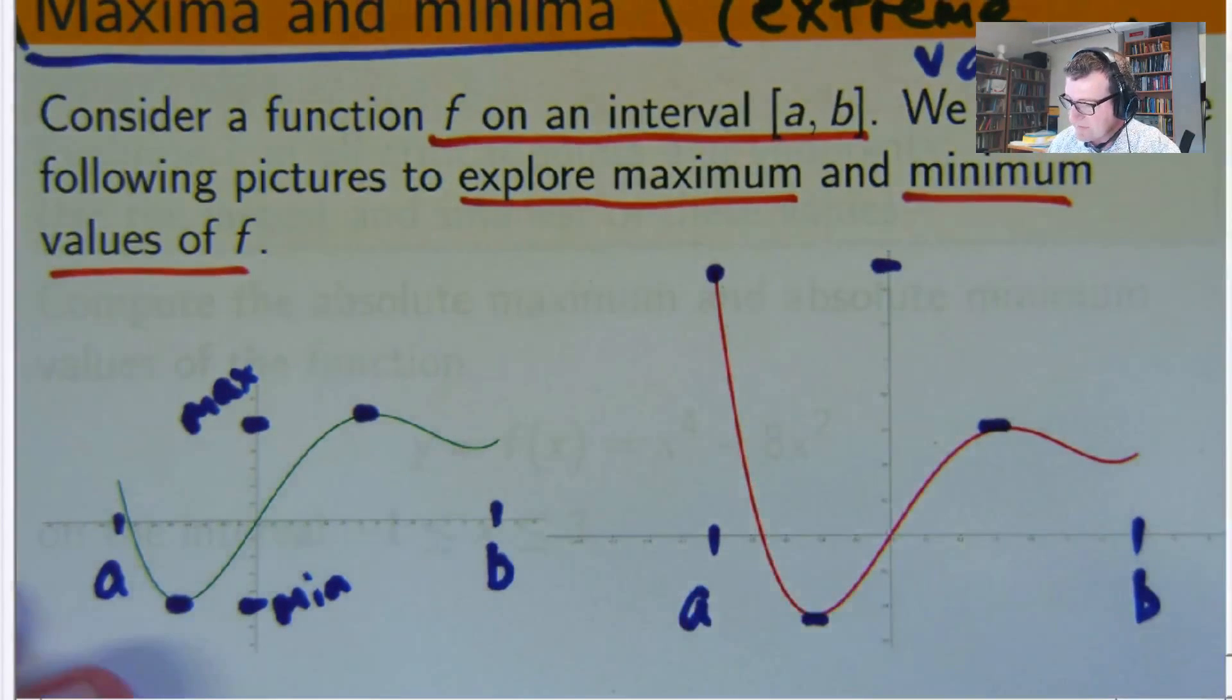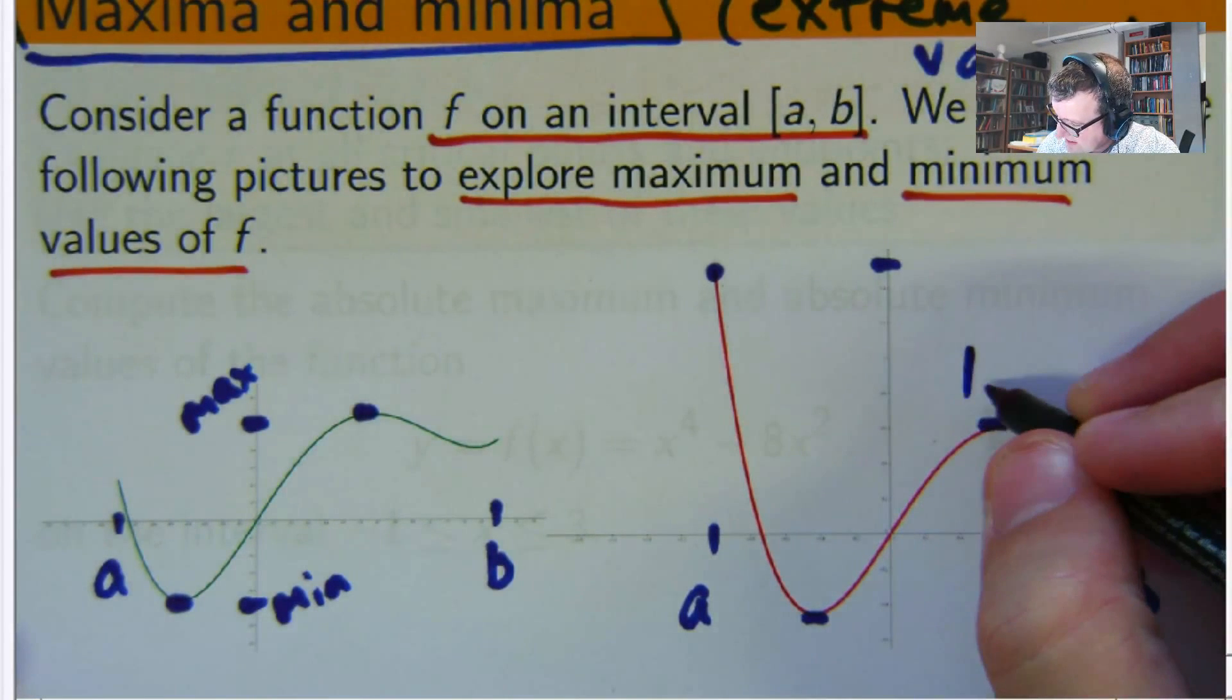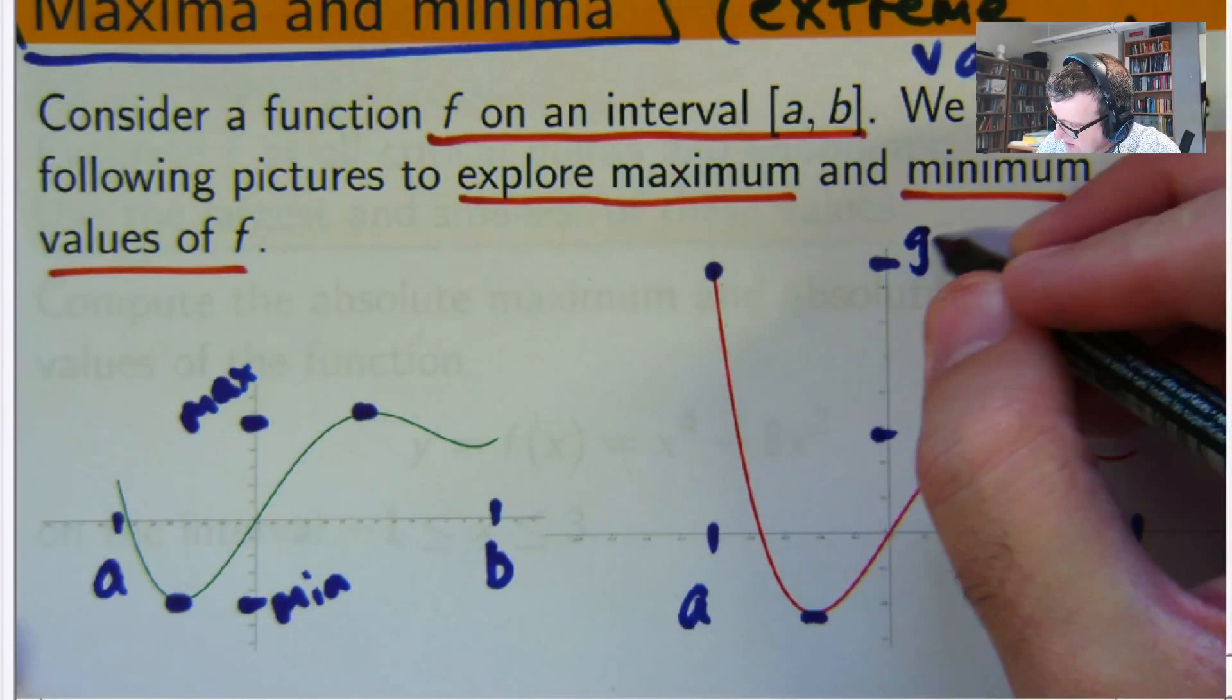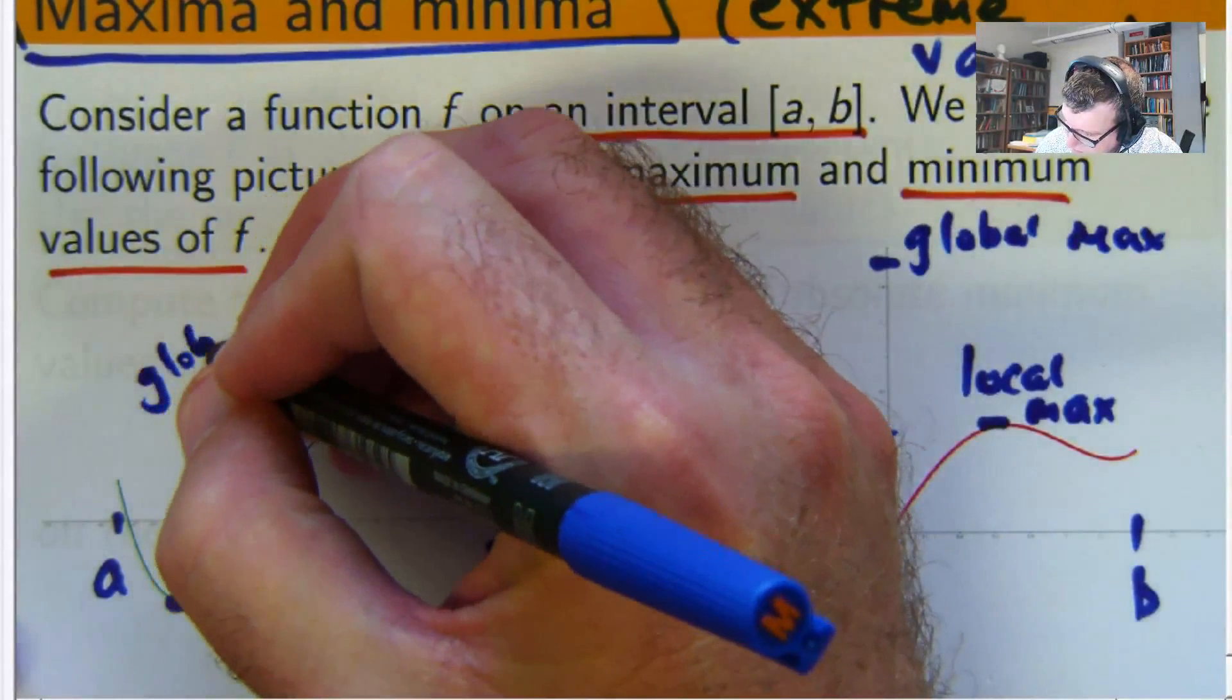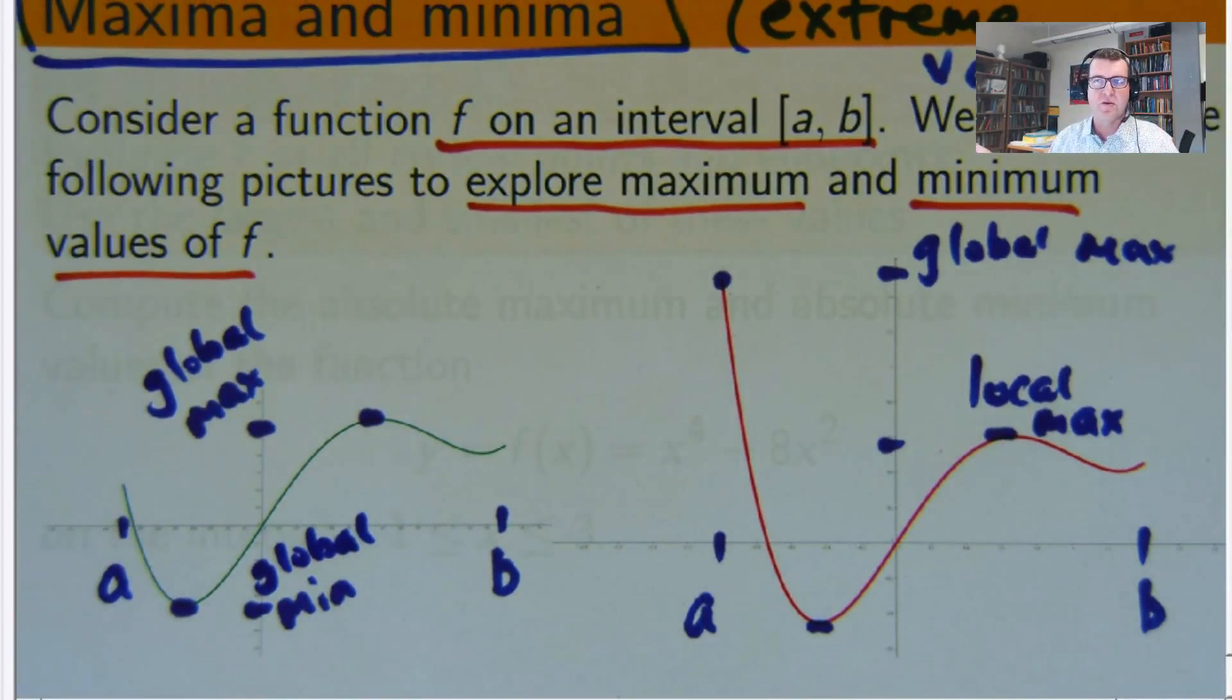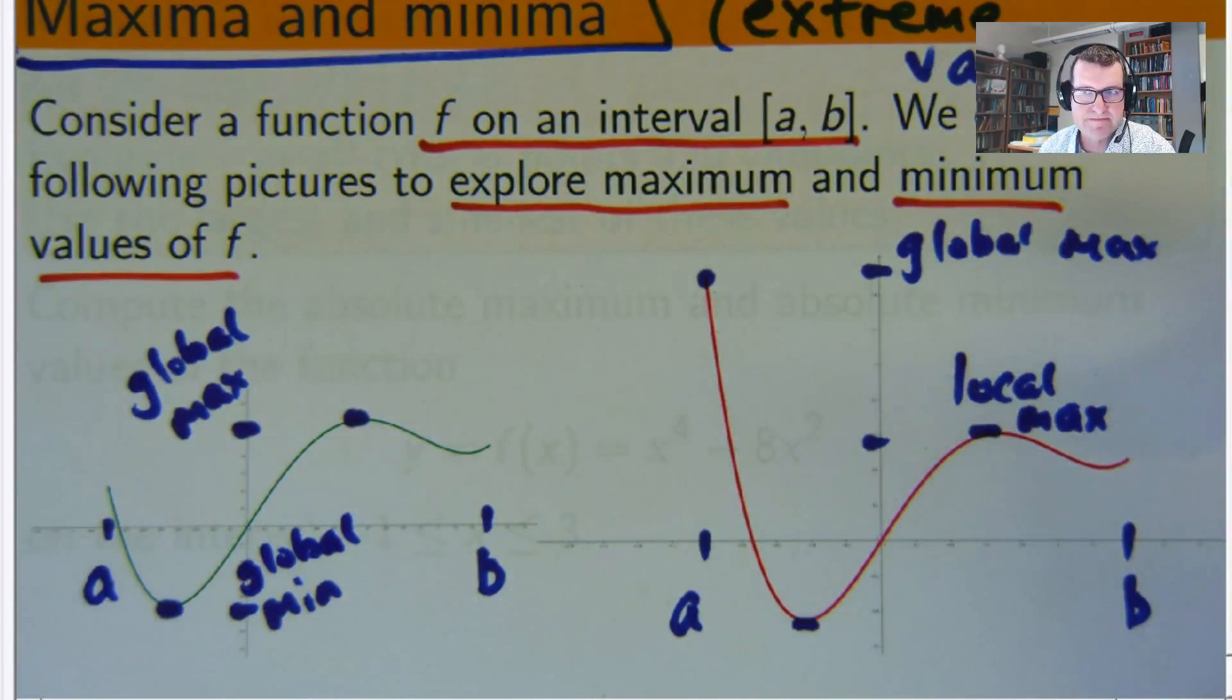This value is the global maximum on this whole interval. It's important to consider these different cases and different scenarios. This peak now turns into what we call a local maximum, and this here is a global max. The biggest value on the whole interval is the global maximum, and similar with a global minimum - you're choosing the biggest or the lowest peak on the whole interval.